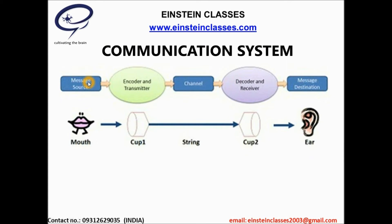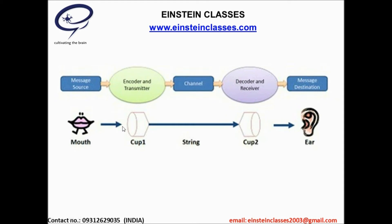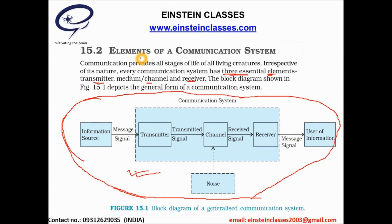In section 15.2, we discuss the communication system. Consider a cup-and-string arrangement: if you produce sound waves through one cup, the person at the other end can hear your sound. The sound travels through the air in cup one, along the string to cup two. In this setup, you are the message source, the cup is the transmitter, the string is the channel, the other cup is the receiver, and the listener is the message destination.